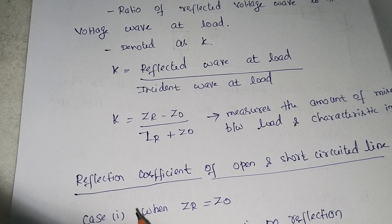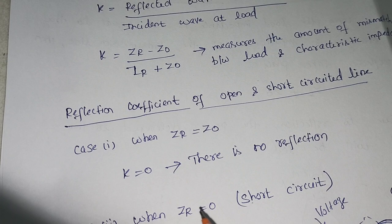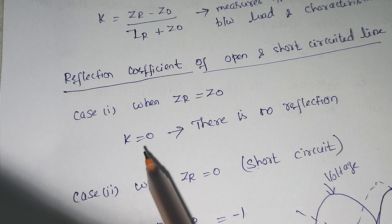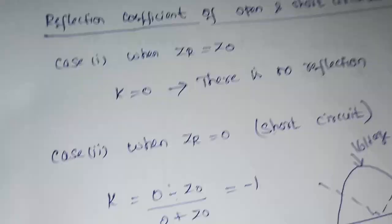Now let us see the reflection coefficient for open and short circuited lines, taking three cases. Case one: when ZR is equal to Z0, that is when the load and characteristic impedances are equal. In that case, K will be equal to 0. When these two impedances are equal, we can say for sure that there will be no reflection taking place between the source and the load.